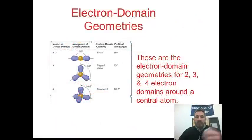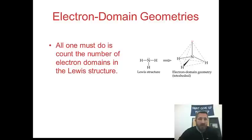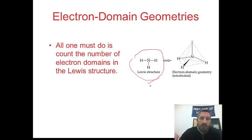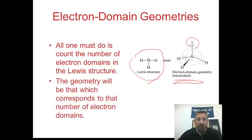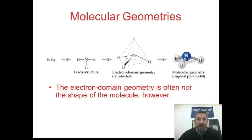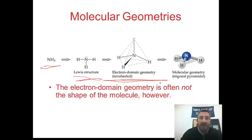So electron domain geometries. This summarizes the electron domain geometries for two, three, and four domains around the central atom. All one has to do is count the number of electron domains in the Lewis structure. For example, if you draw NH3, you see there are four electron domains, giving a tetrahedral arrangement of electrons — three involved in bonding and one lone pair. The geometry corresponds to the number of electron domains. First we look at the formula, draw the Lewis structure, look at the electron domain geometry, and from that determine the molecular geometry.